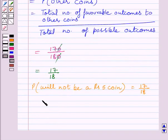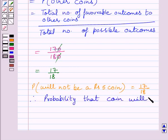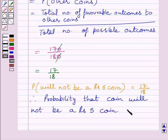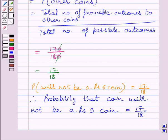So the required answer for the second part is probability that coin will not be a Rupees 5 coin is equal to 17 upon 18. This completes the session. Hope you understood the solution. Take care and have a nice day.